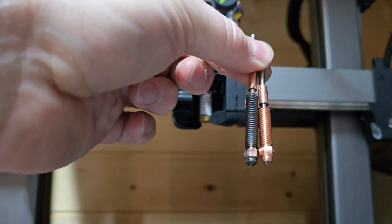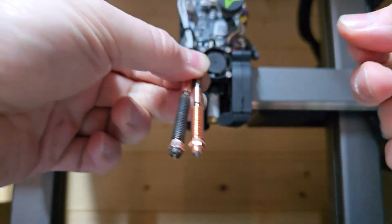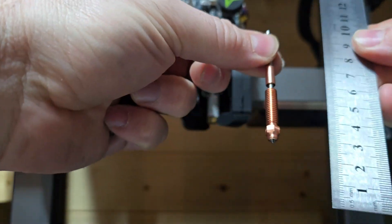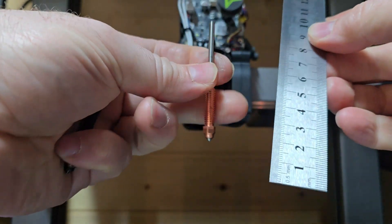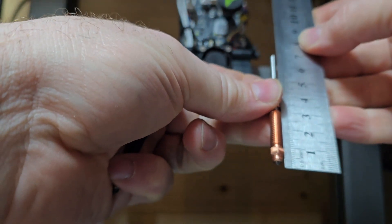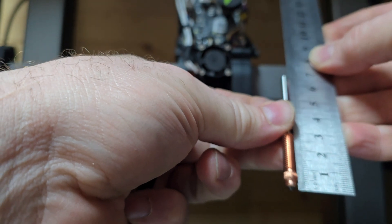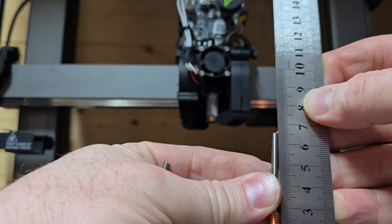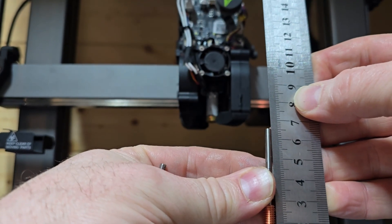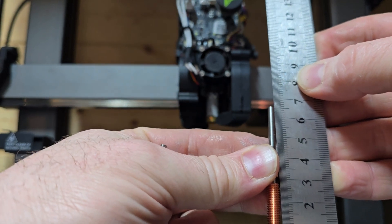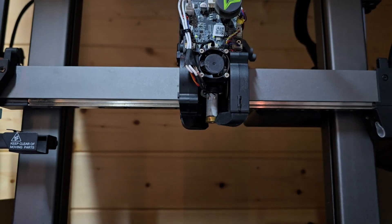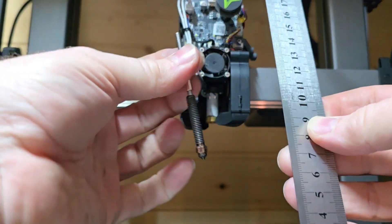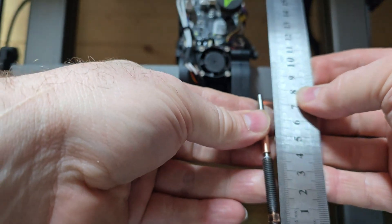Okay, so what we're going to do now is quickly measure. So this is what I use on the K1 Max. Now you're looking at approximately 6.5 centimeters, 65 millimeters in length.